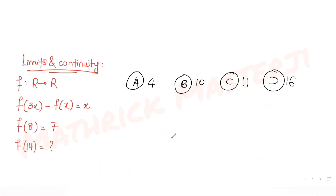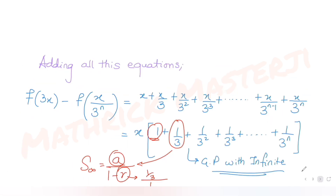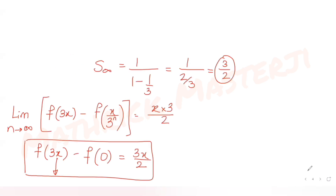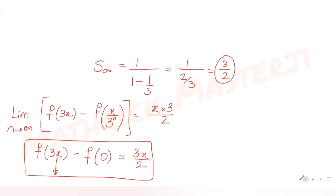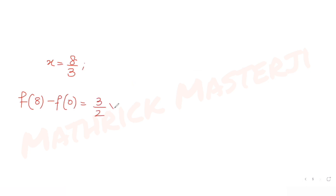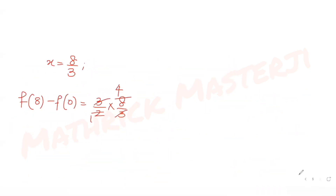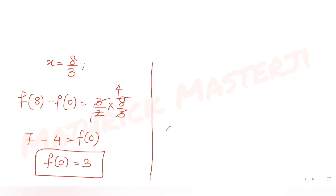We are given f(8) = 7. To get f(8) from the equation f(3x) - f(0) = 3x/2, I substitute x = 8/3. This gives f(8) - f(0) = 3/2 · (8/3) = 4. Since f(8) = 7, we get 7 - f(0) = 4, so f(0) = 3.